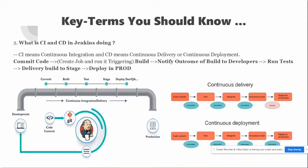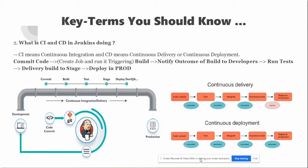The difference between continuous delivery and continuous deployment is important. In continuous delivery, the process is set to manual — code is released to stage but not yet deployed to production. This gives you control over when to deploy by following a change request process; once changes are approved and reviewed, you manually run the build to deploy to production.